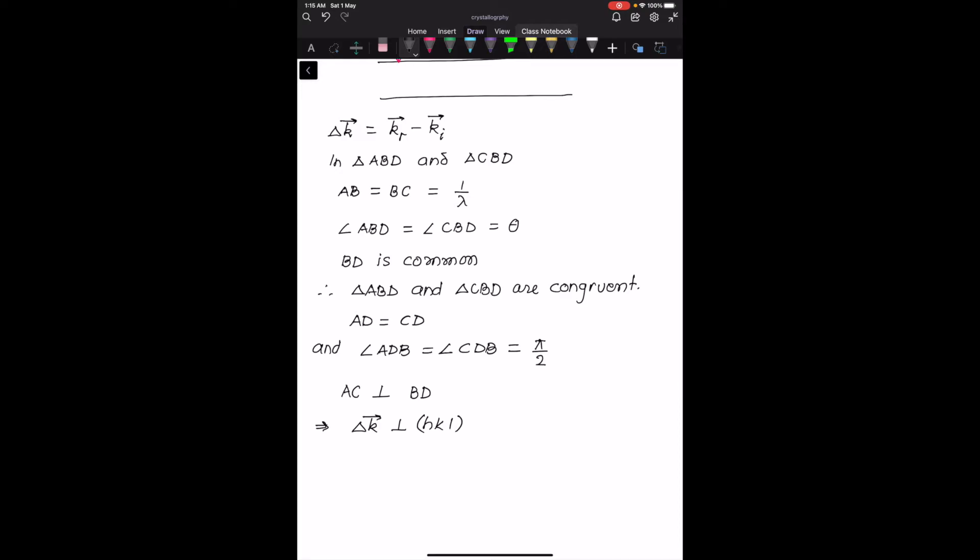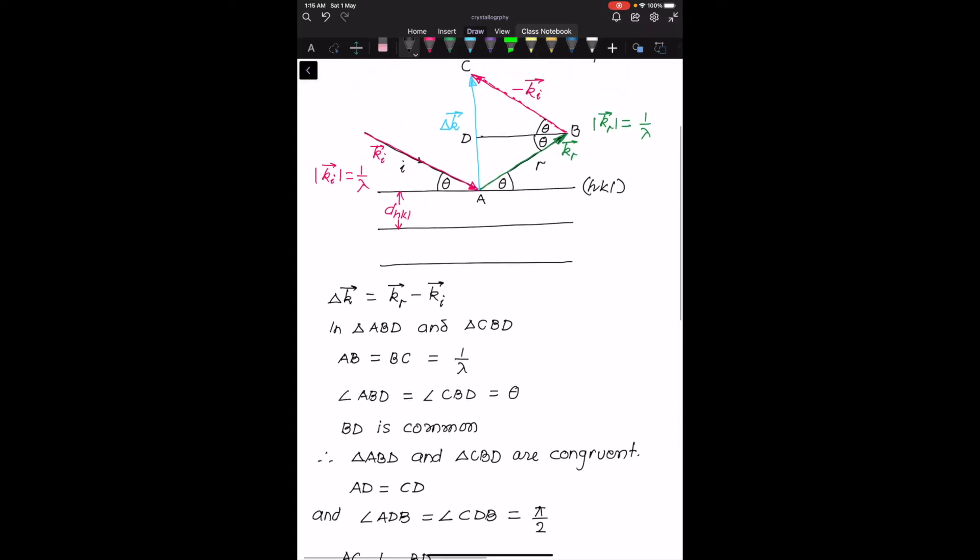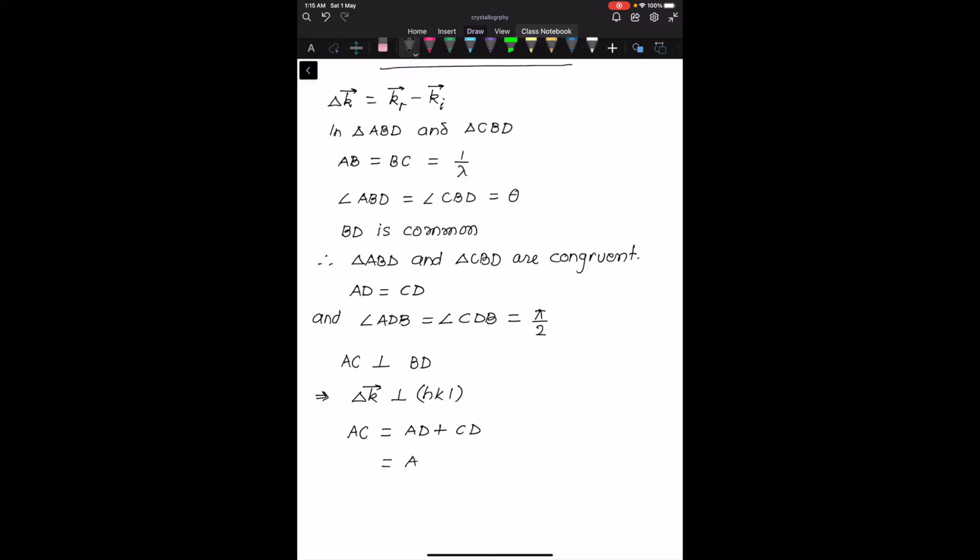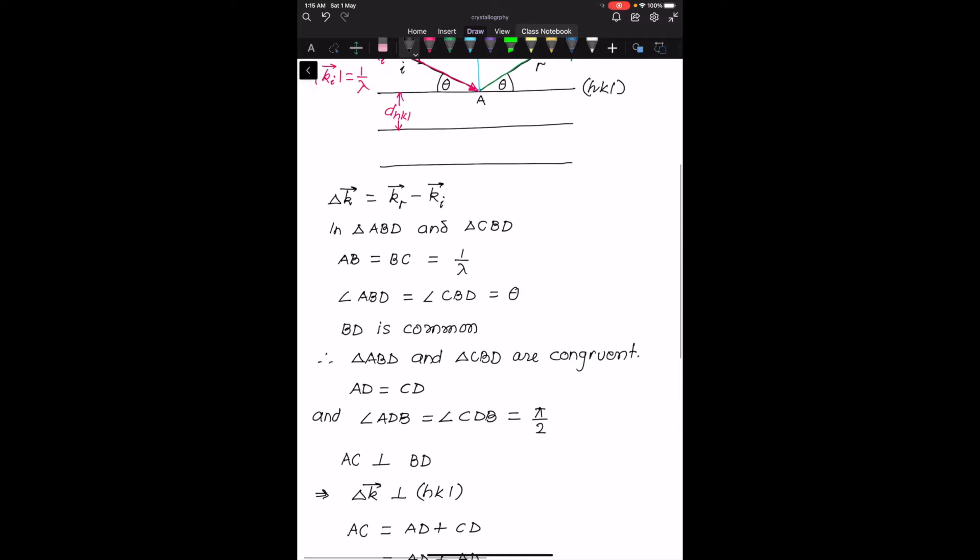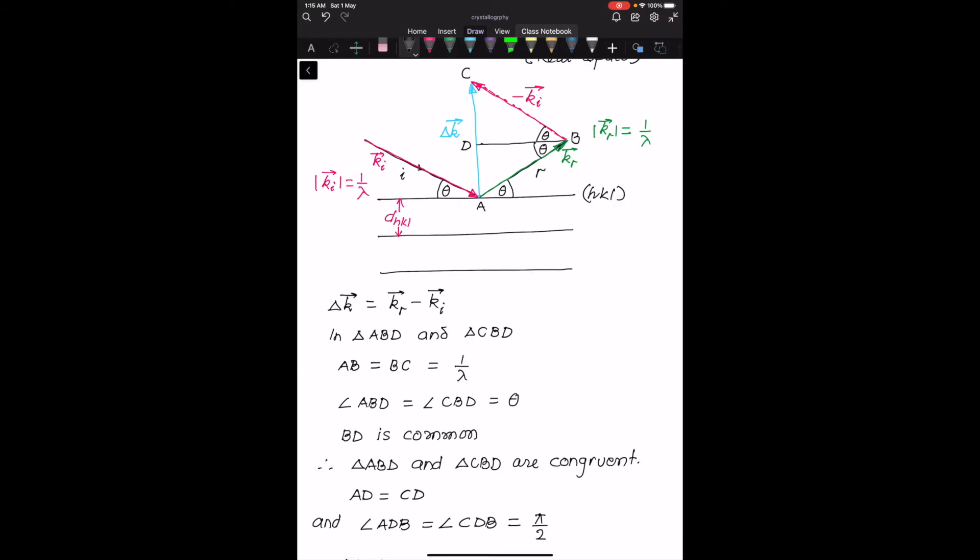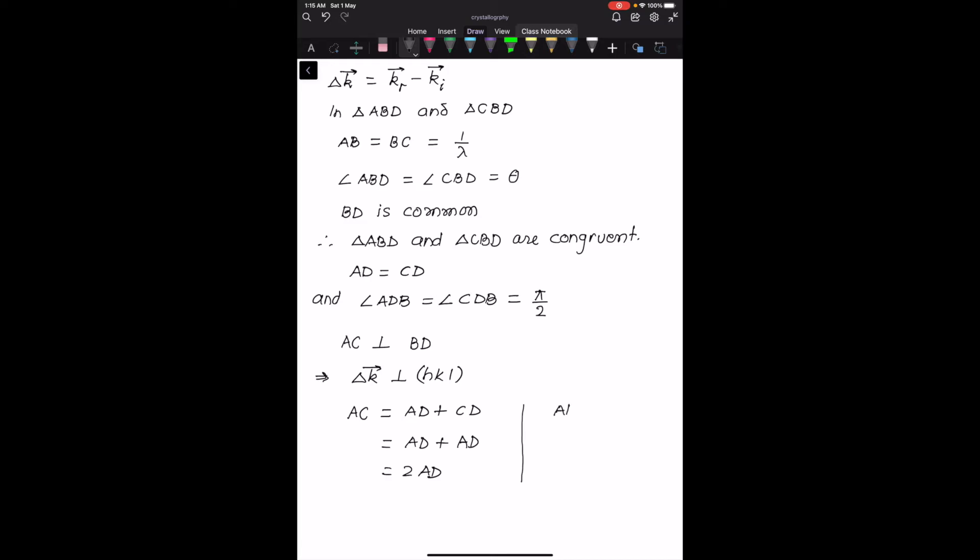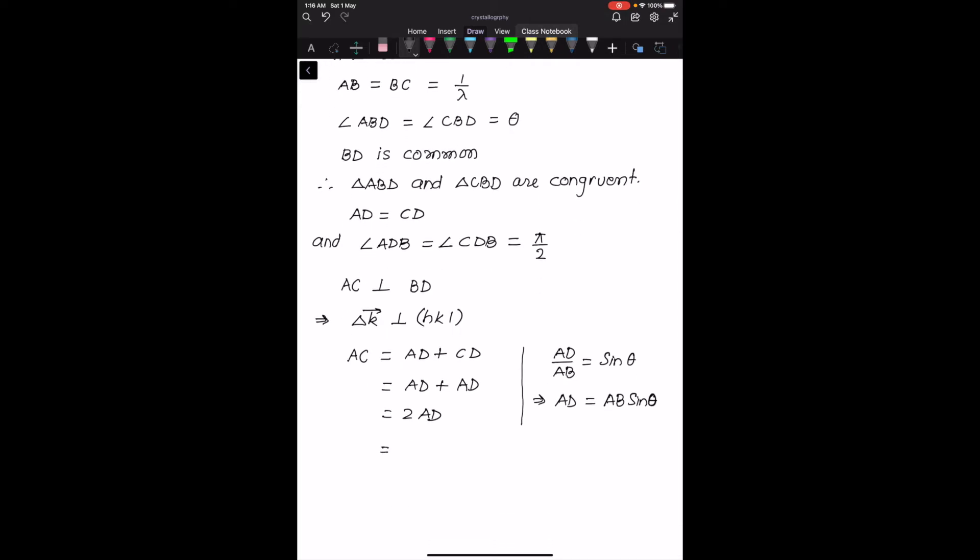The other interesting property I get from AD equals CD: AC equals AD plus CD, which is 2 times AD. But if you look at the triangle ABD, AD by AB is sin theta. So AD equals AB sin theta.